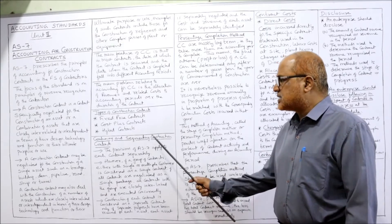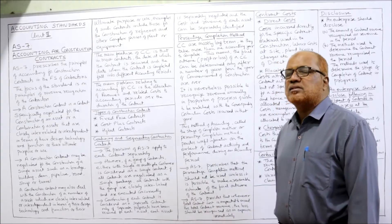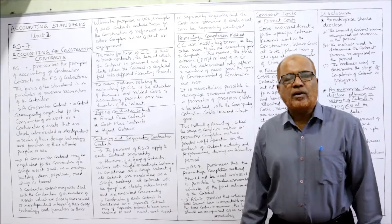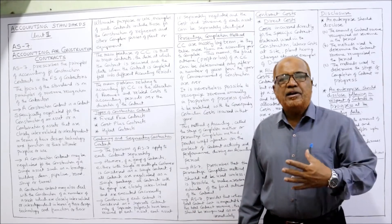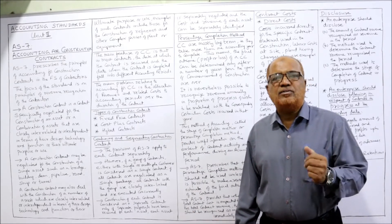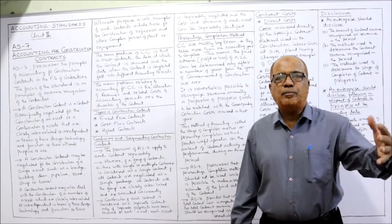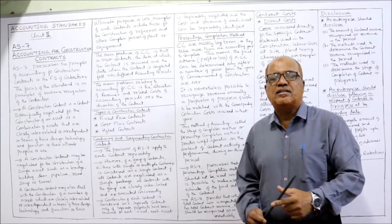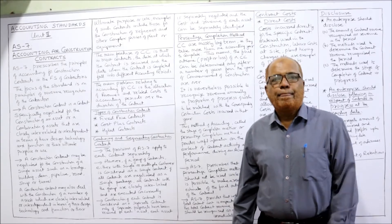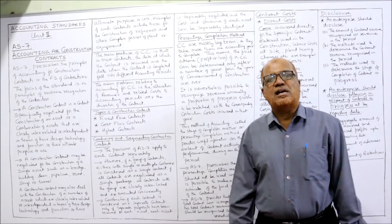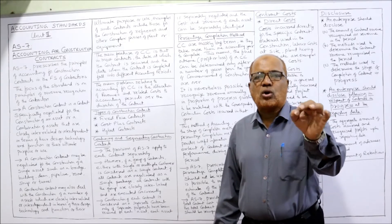Regarding combining and segmenting construction contracts: the provisions of AS 7 apply to each contract separately. A contractor may have different contracts at different sites — building a bridge at one site, a road at another, a multi-floor building at another — and AS 7 applies to each contract separately.